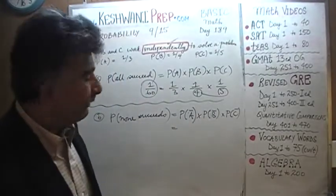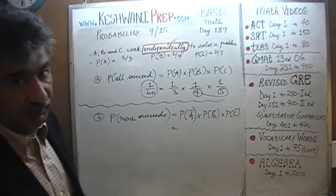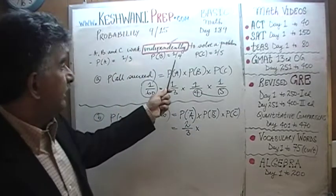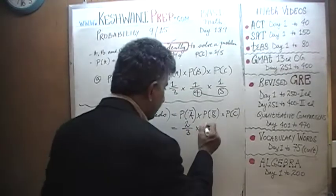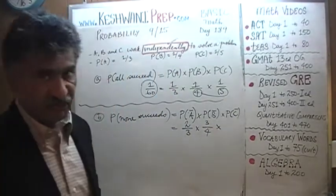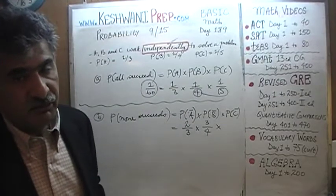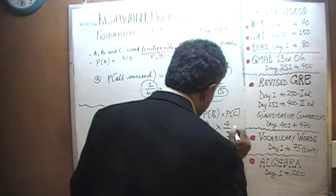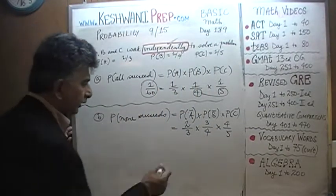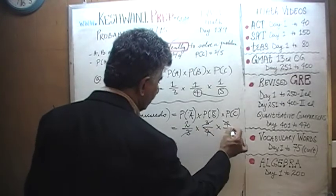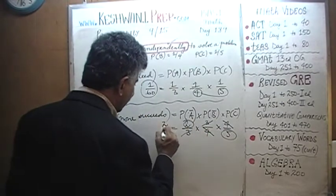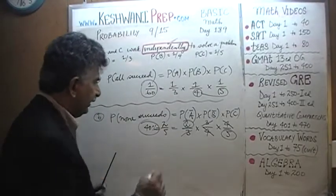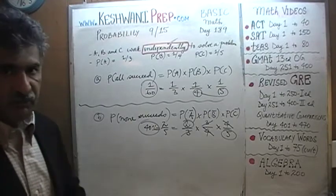A has a one-third chance of success, so there is a two-thirds chance A will not be successful. B has a one-quarter chance of success, so there is a three-quarters chance B will not be successful. C has a one-fifth chance of success, so there is a four-fifths chance C will not be successful. We see a three and three cancel, a four and four cancel, leaving two over five.